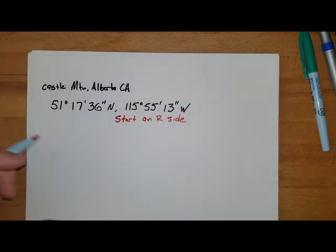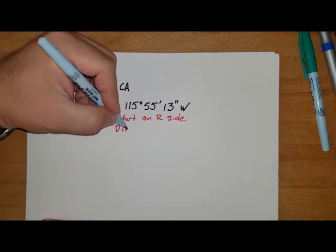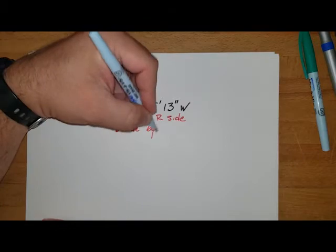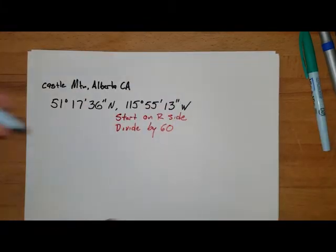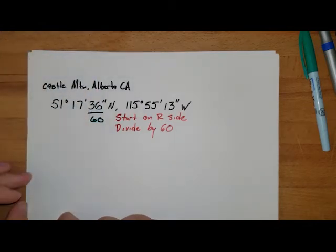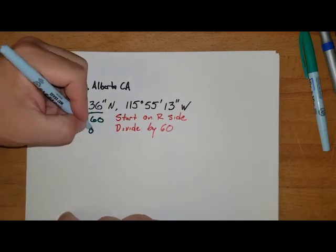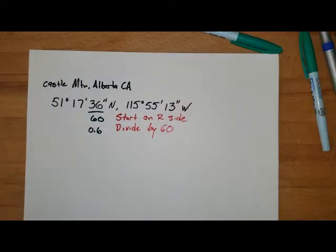We're going to take that value and it's going to give us seconds, but we want to figure out minutes, so we're going to divide by 60. All right, so we're going to take that 36 and we divide that by 60. And the solution that we get there is going to be 0.6.